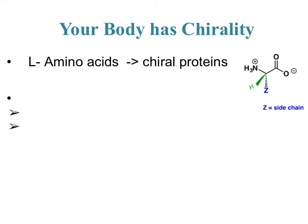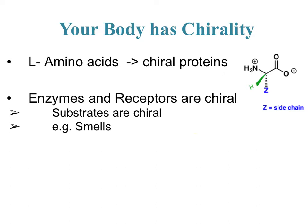Because the building blocks of your proteins all have chiral centers, your proteins overall are going to have some chirality or specific stereochemistry. We find that enzymes and receptors are both chiral because they're made of proteins, and that means their substrates also have to be chiral. The substrate is just the thing that goes into the enzyme or receptor and produces its particular response.